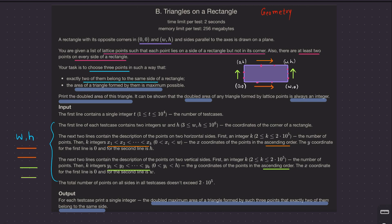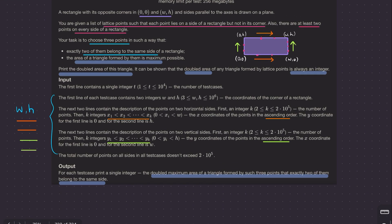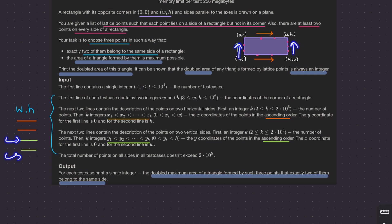In the input you will be given W and H, which lets you define the entire rectangle. Then the next two lines describe the lattice points on the horizontal sides, and the following two lines define the points on the vertical sides.